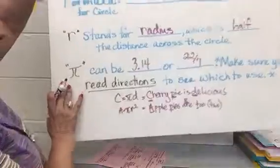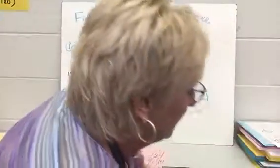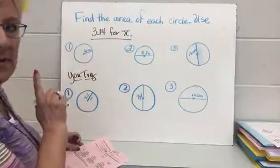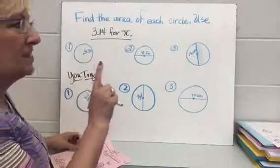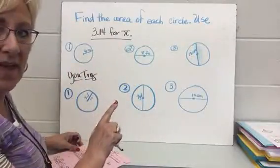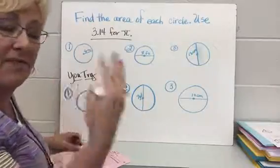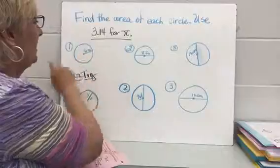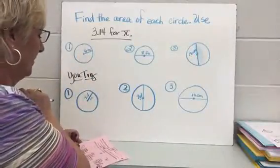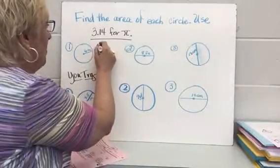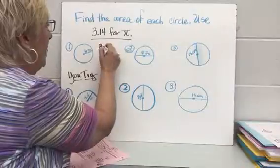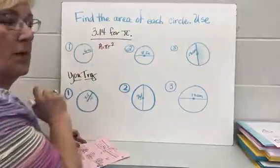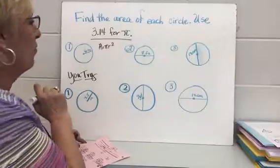Let's go ahead and do some of these on your paper. First of all, all I need is the radius. If I've got a diameter, I just halve it. If I have a radius and I'm trying to find a diameter, I just double it. Here we've got six meters for the radius, so I'm going to write the formula: area equals pi r squared, using 3.14 for pi.